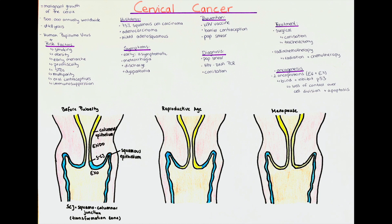The HPV vaccine is recommended to be taken before the first sexual contact and protects women against virus types 6, 11, 16, and 18. Types 16 and 18 have been identified as a prerequisite for the development of cervical carcinoma, while strains 6 and 11 are the major cause of genital warts caused by HPV.